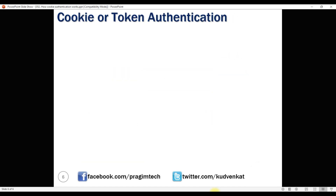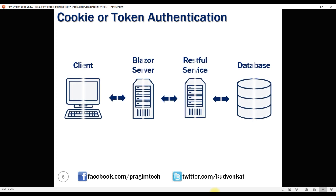At this point, you might be wondering: should we use cookie authentication or token authentication? The answer really depends on the application architecture. This is our Blazor application architecture. We have a Blazor Web application and a Web API. The Blazor Web application calls the Web API. Depending on how you want your application to scale, you may have both deployed on the same server or on different servers.